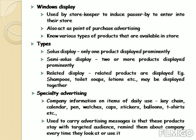The next type of outdoor advertising is specialty advertising — a very commonly used advertising technique in which useful company information is printed on items that are normally in daily use. For example, names, logos, and slogans of a particular company are placed on items like keychains, calendars, pens, watches, caps, mousepads, clocks, notepads, and t-shirts. The best thing about using simple articles of daily use to carry the advertising message is that these products stay with the targeted audience and remind them about the company every time they look at or use it.